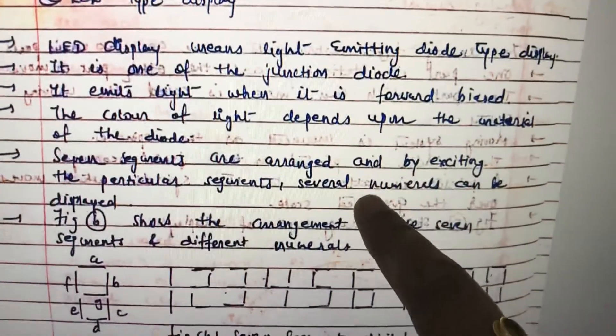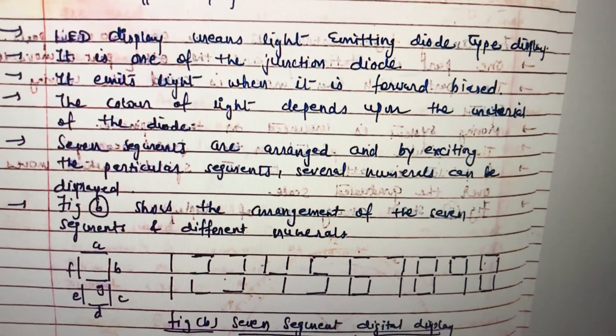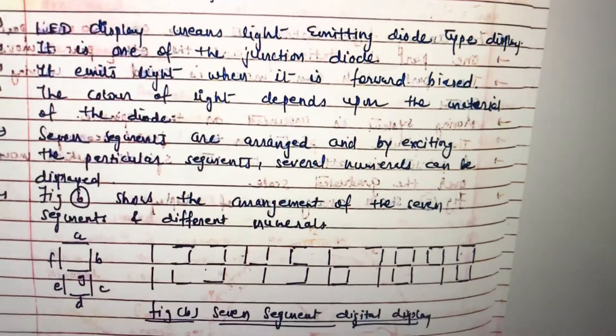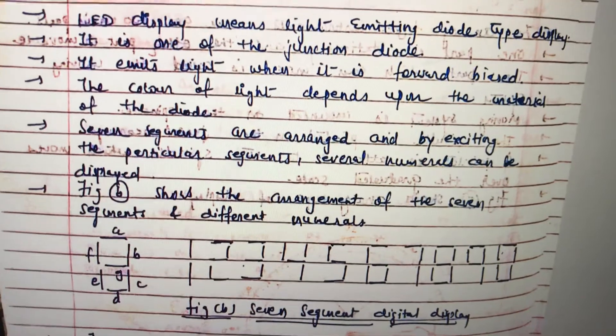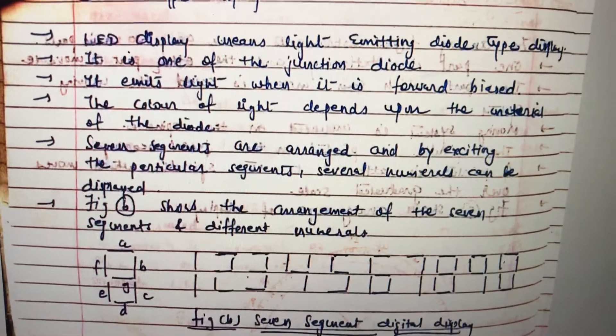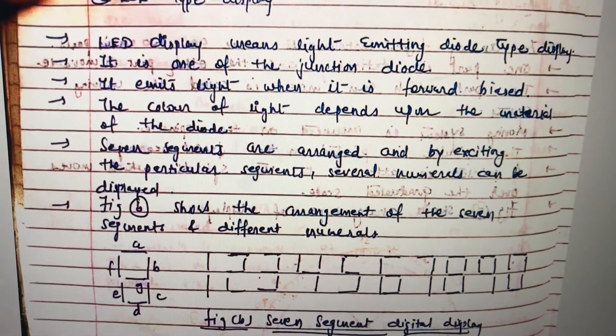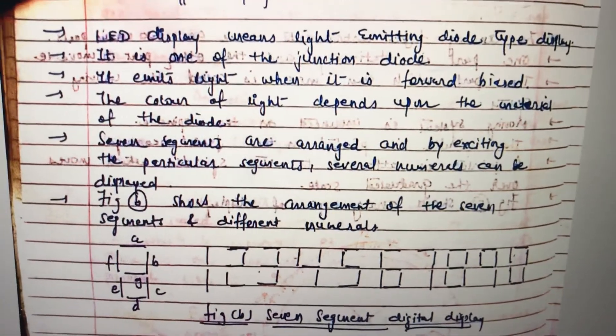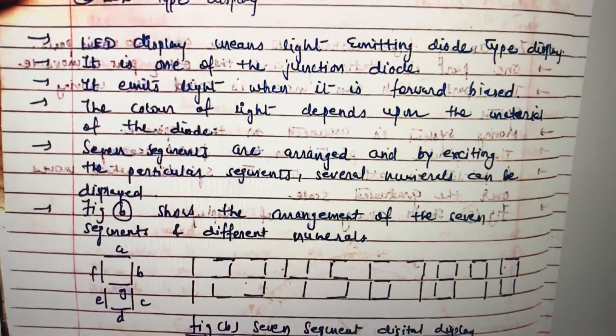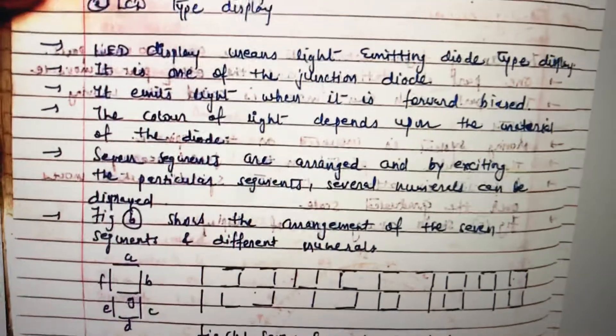Today we are going to understand LED display, which is part of your syllabus. LED display means Light Emitting Diode type display. It is one of the junction diodes which we are using for the display of any number or digit. It emits light when it is in forward bias.